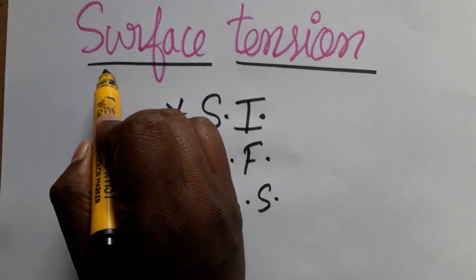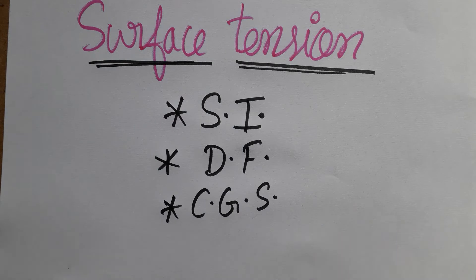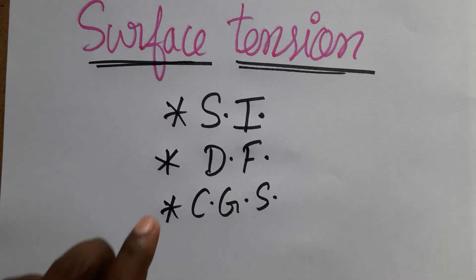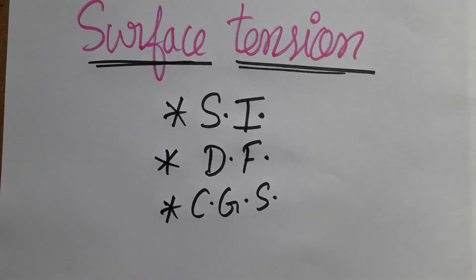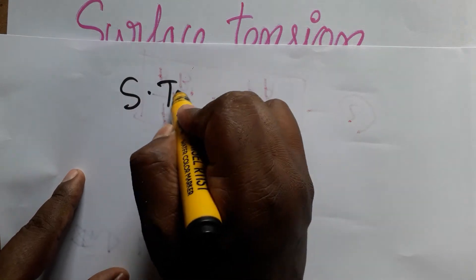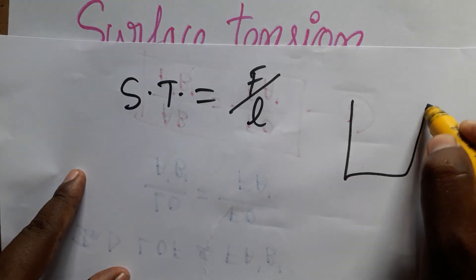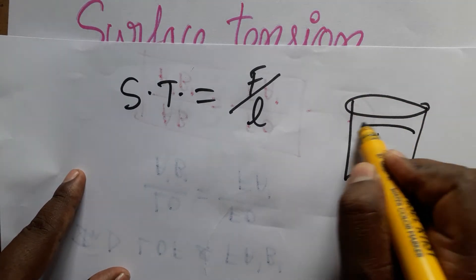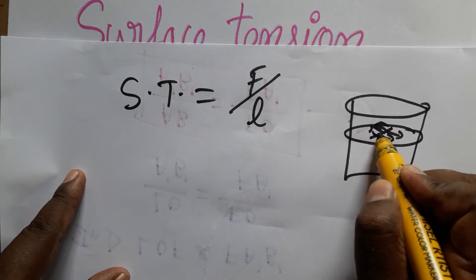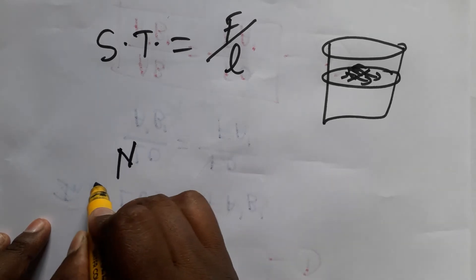Today we are going to see surface tension: SI unit, dimensional formula, and surface tension in the CGS system. Surface tension is defined as force per unit length. When an object is placed on a liquid surface, the force created per unit length is called surface tension. The SI unit of force is newton and the unit of length is meter.